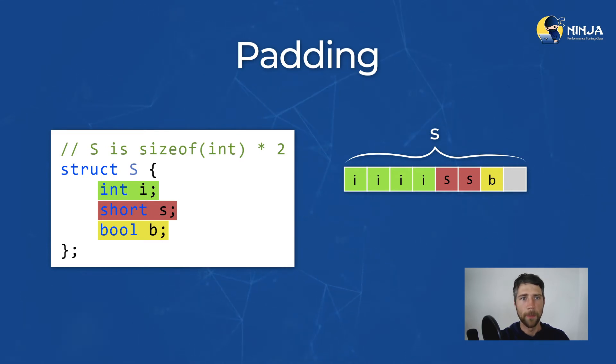The simple rule here is to start with types that require more space, like int64 and double, then int32 and float, and so on. That was padding.